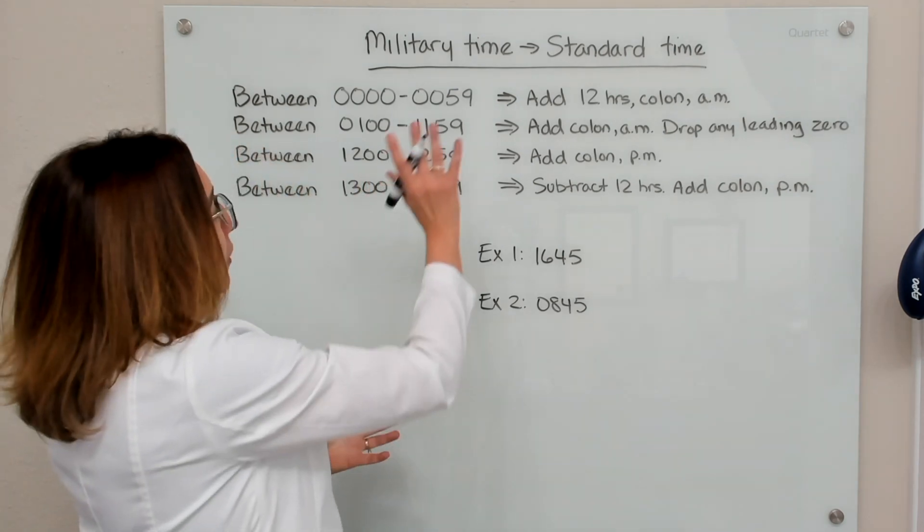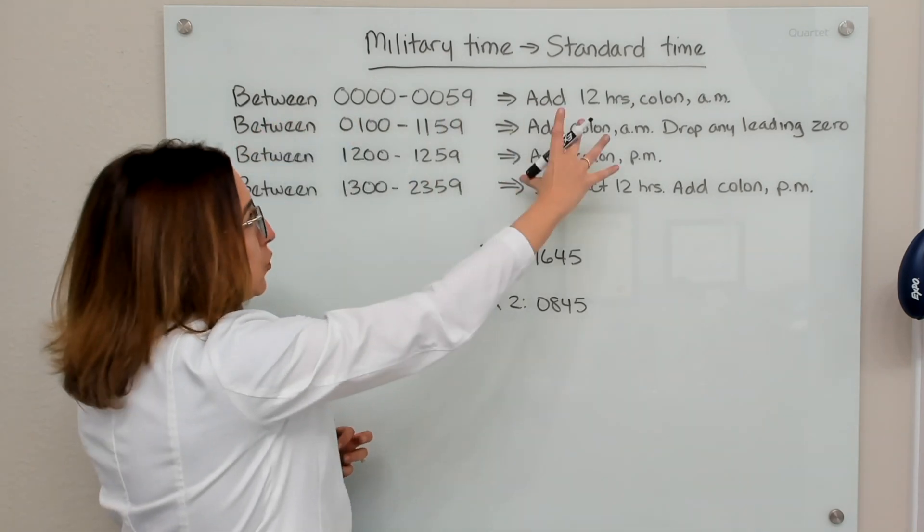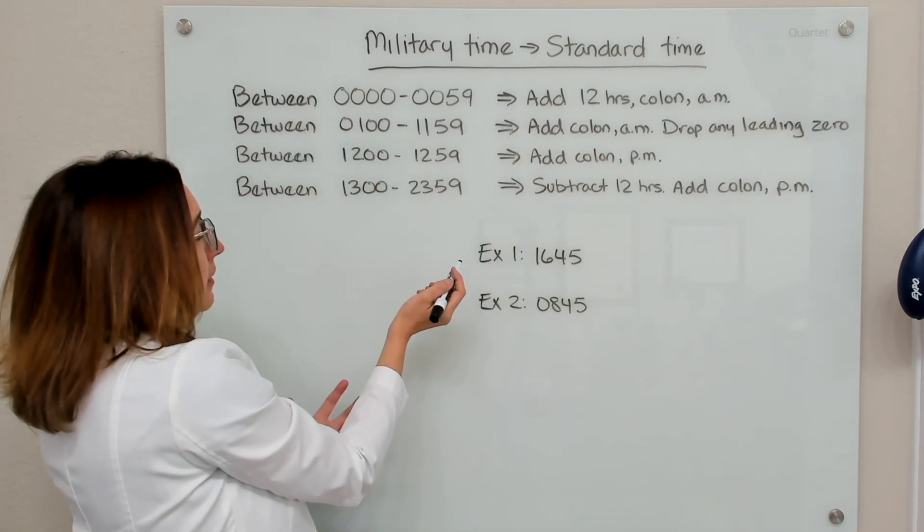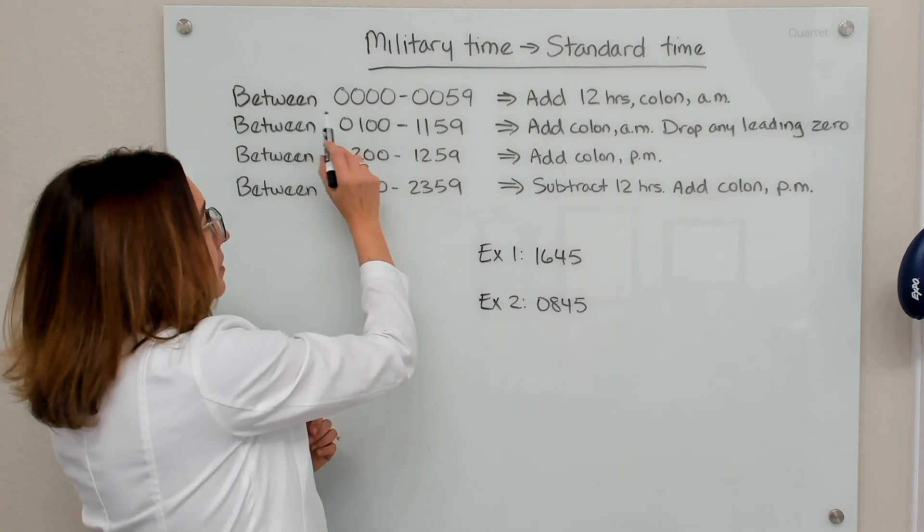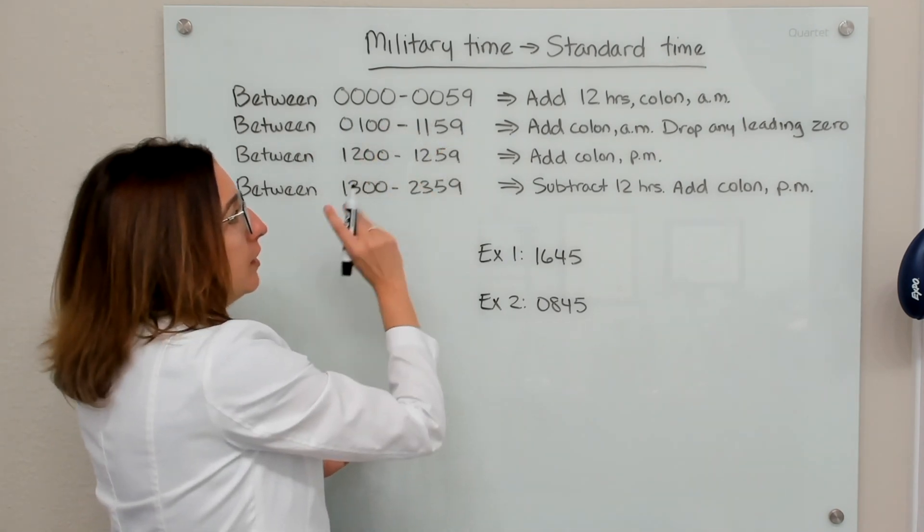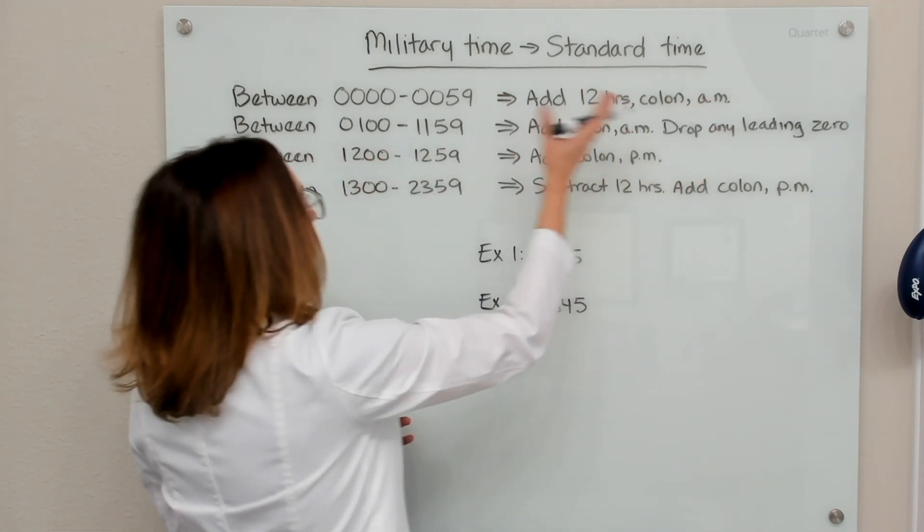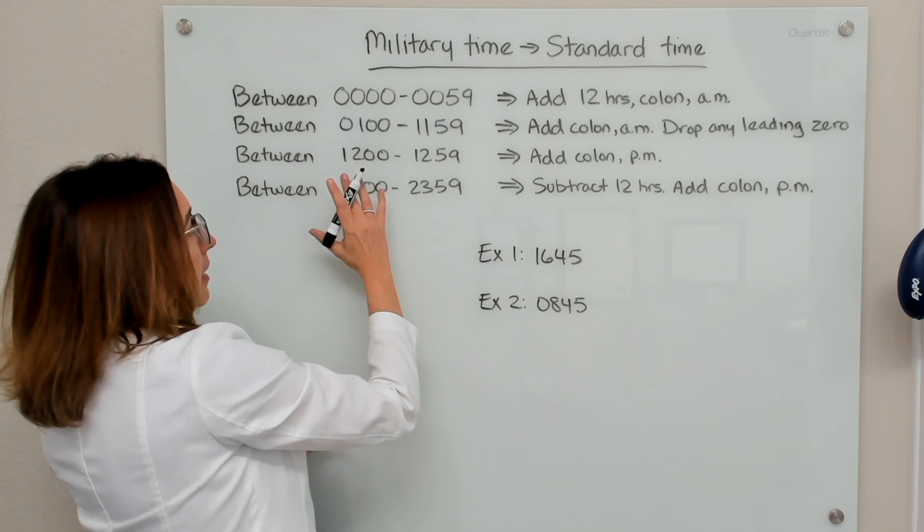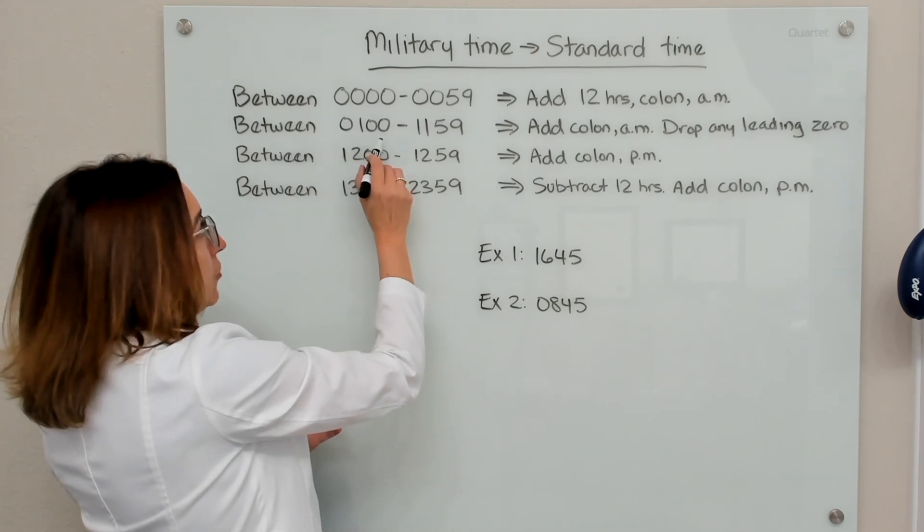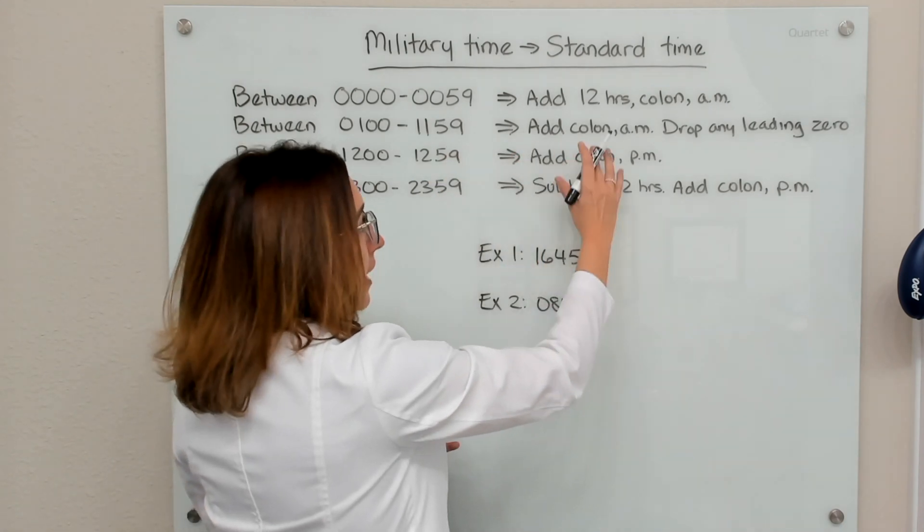So when we're going from military time to standard time, we're going to use these rules right here. So if we're dealing with a military time between 0000 and 0059, we're going to add 12 hours, a colon, and an a.m. If we're dealing with a military time between 0100 and 1159, we're going to add a colon and an a.m. and drop any leading zero that may be present.